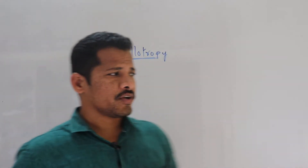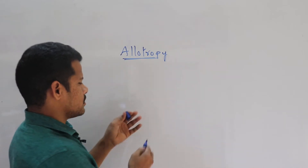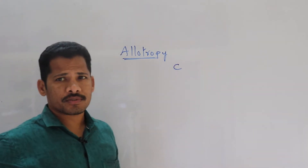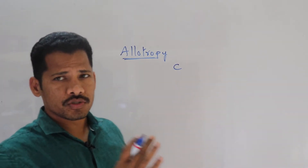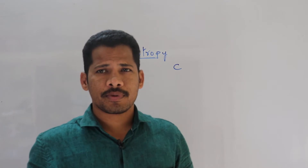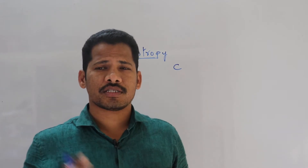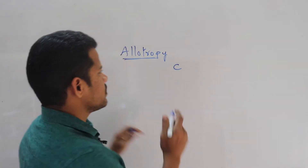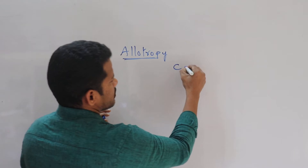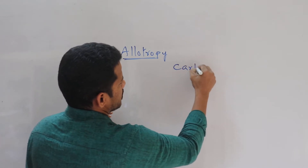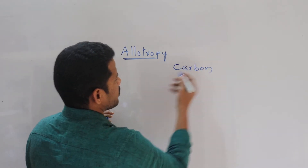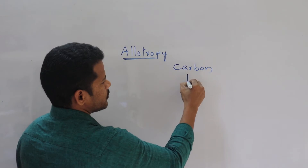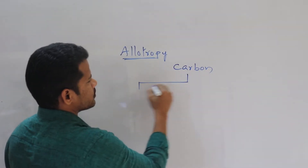For example, carbon exists in different physical forms but shows the same chemical properties. On oxidation it gives carbon dioxide. This session I am going to discuss about carbon allotropes — carbon has two types of allotropes.